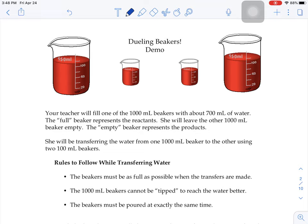And there's going to be two beakers that one of them is filled with about 700 milliliters of water. And the full beaker is going to represent our reactants beaker. And then there's going to be an empty beaker, which represents the products. So in this video, you're going to see they're going to be transferring water from the reactants beaker into the products beaker.